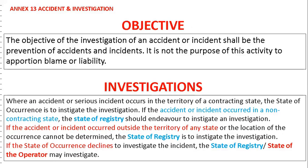Investigations: where an accident or serious incident occurs in the territory of a contracting state, the state of occurrence is to instigate the investigation. If the accident or incident occurred in a non-contracting state, the state of registry should endeavor to instigate an investigation. If the accident or incident occurred outside the territory of any state or the location cannot be determined, the state of registry is to instigate the investigation. If the state of occurrence declines to instigate the investigation, the state of registry or the state of operator may investigate.